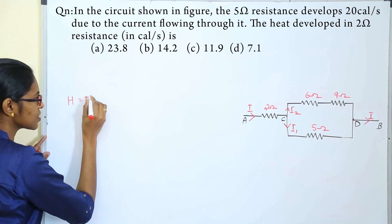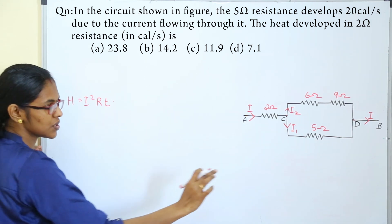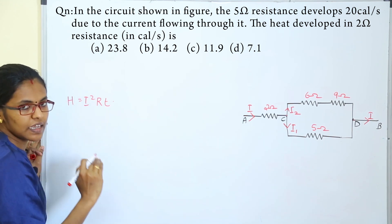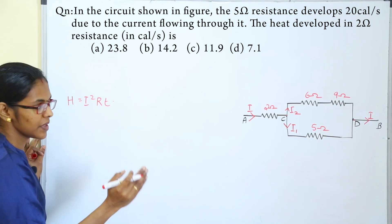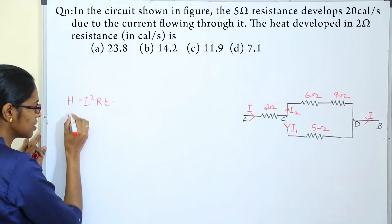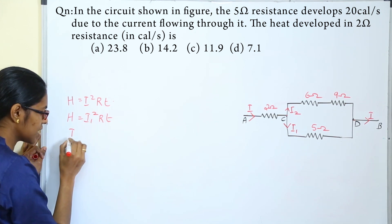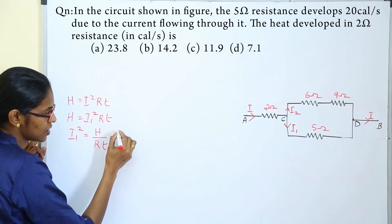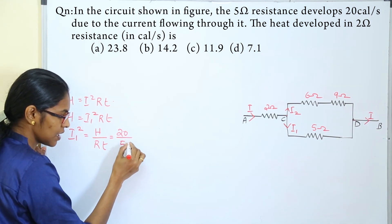H is equal to I squared R T. This 5 ohm resistor carries a particular current, which we call I1. If the I1 current flows, the heat developed is 20 calories per second. So, H equals I1 squared times R times T. Therefore, I1 squared equals H divided by R T. With heat equal to 20 calories per second and resistance equal to 5.